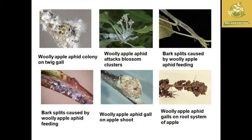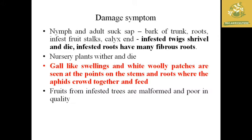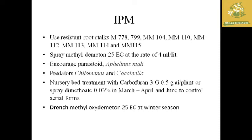The damage symptoms caused by woolly aphids include infested twigs and leaves dying due to chlorophyll being sucked by the nymph as well as the adult. The plant produces many fibrous roots because of the chemical injected into the plant. There is gall-like swelling and white woolly patches seen at the point of stem and root. The aphids crowd together and feed on the stem and roots, and infected fruit can be malformed and of poor quality.